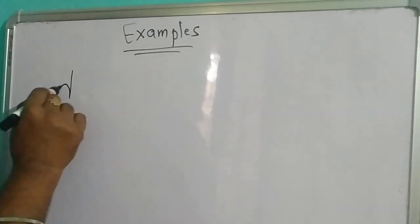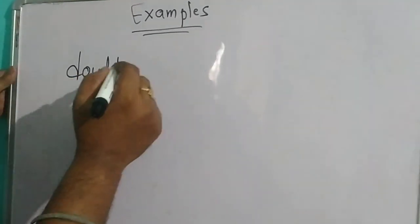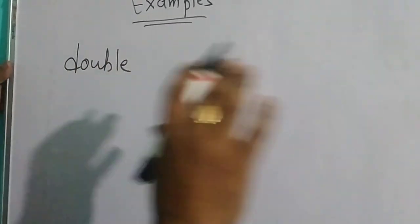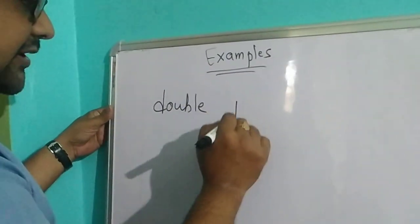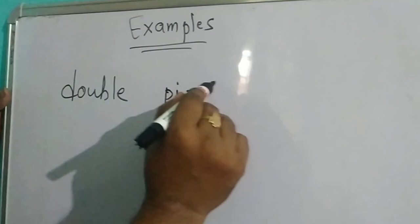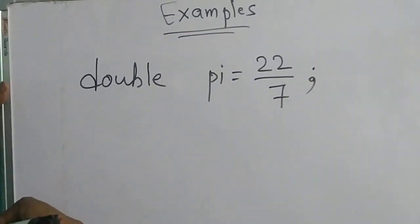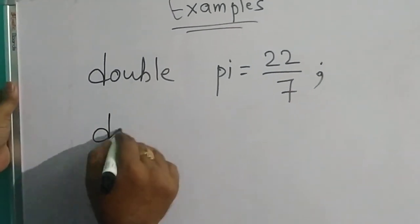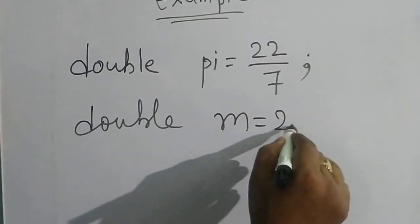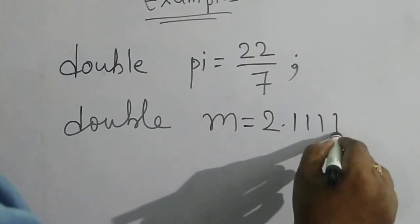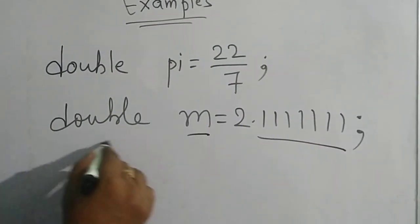Now we will go through double (D-O-U-B-L-E). Double is a data type that can store very big decimal values as well as fractional values. So: double pi = 22/7; double m = 2.1111 — a very big decimal value that I can also store in double.